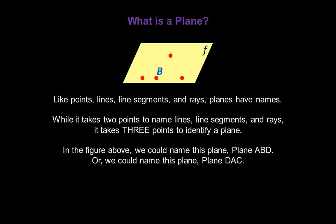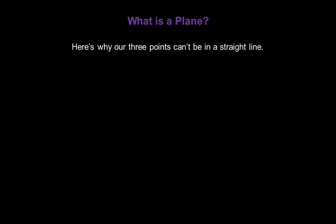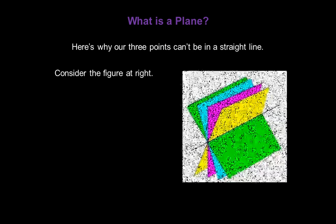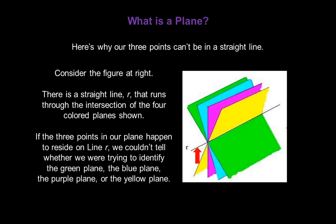Or we could name this plane DAC. In fact, we could use any combination of three letters that are not in a straight line. Here's why our three points can't be in a straight line. Consider the figure at right — there's a straight line, line R, that runs through the intersection of the four colored planes shown. If the three points in our plane happen to reside on that line R, we couldn't tell whether we're trying to identify the green plane, the blue plane, the purple plane, or the yellow plane. That's why our points can't be on a straight line.